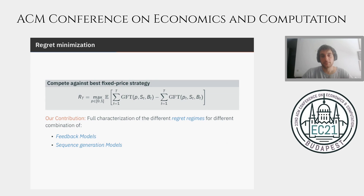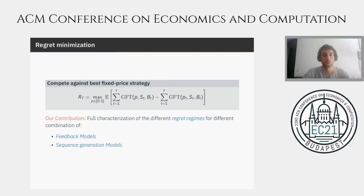Given these model specifications, we are ready to state our objective: regret minimization. We want to devise a learning algorithm that minimizes regret, defined as the difference between the total gain from trade achieved by the algorithm and the total gain from trade of the best fixed price. The main result and contribution of the paper is a full characterization of the different regret regimes achievable for the various combinations of feedback model and sequence generation model.